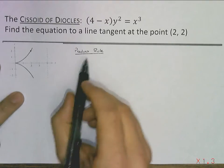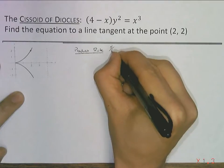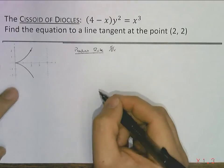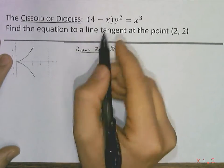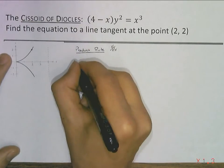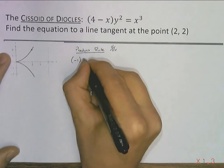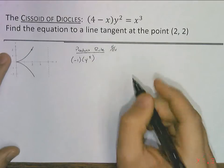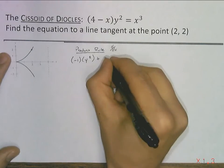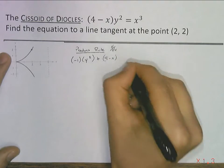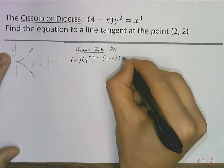Okay, so the product rule is the derivative of the first. Remember, we're doing this in respect to x like all of our derivatives so far, and just like we practiced in class. So, the derivative of the first part, if we take a look at that, is just negative 1 times the regular second part, y squared.